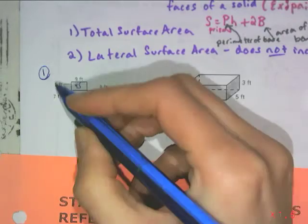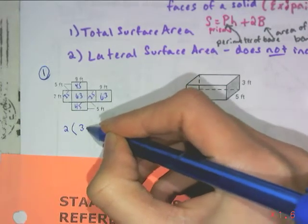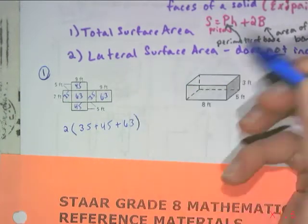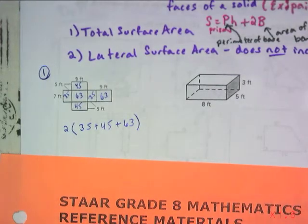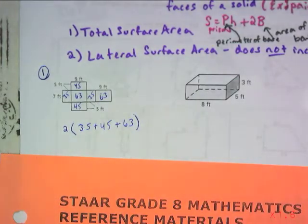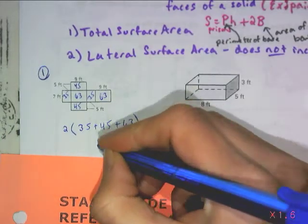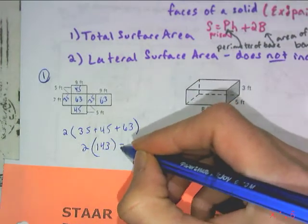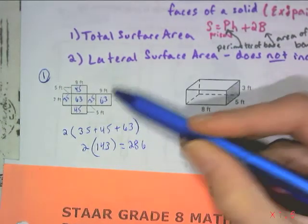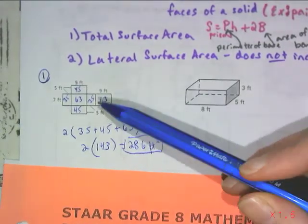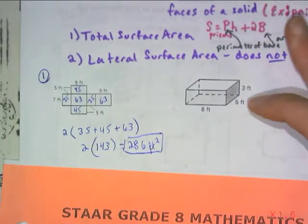The final face would be a 7 by 5, so you've got a 35 and a 35. If you're adding all those together, you can add them all individually, you can double each one, or you can simply say you're going to double the sum of all three unique faces. So you add up 35, 45, and 63, getting 143 times 2, which gives you a surface area of 286. It's an area, so your units will be squared.